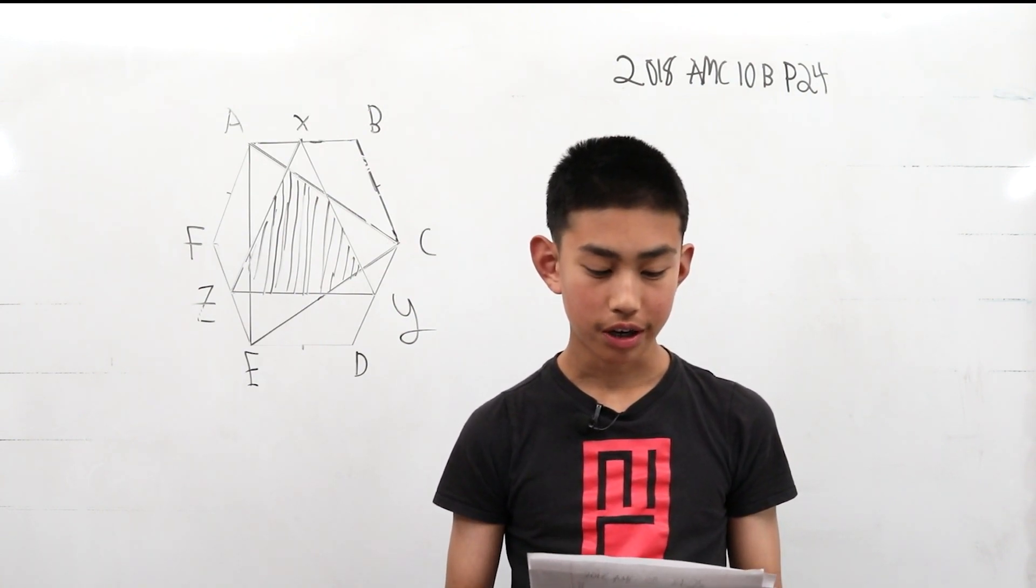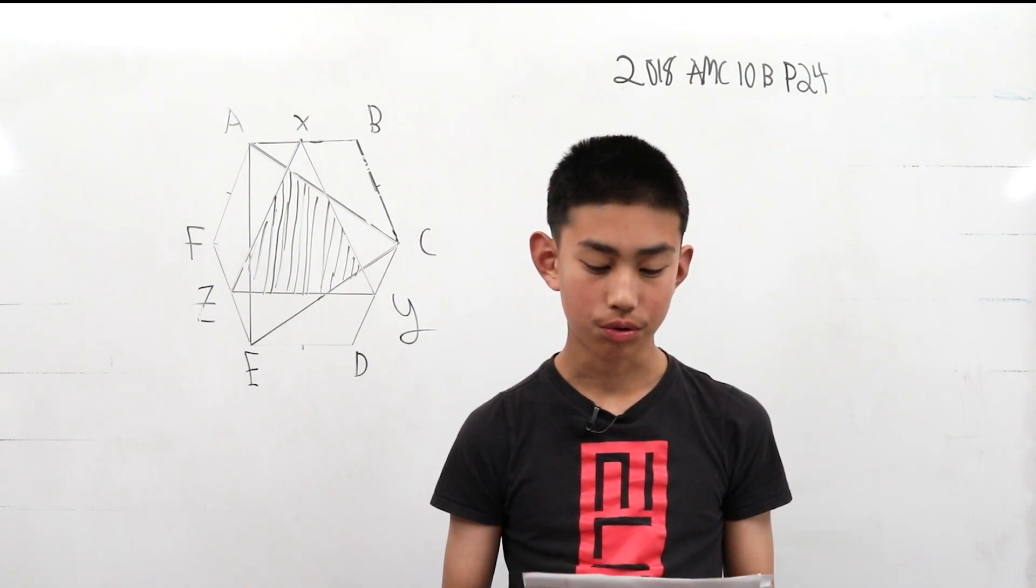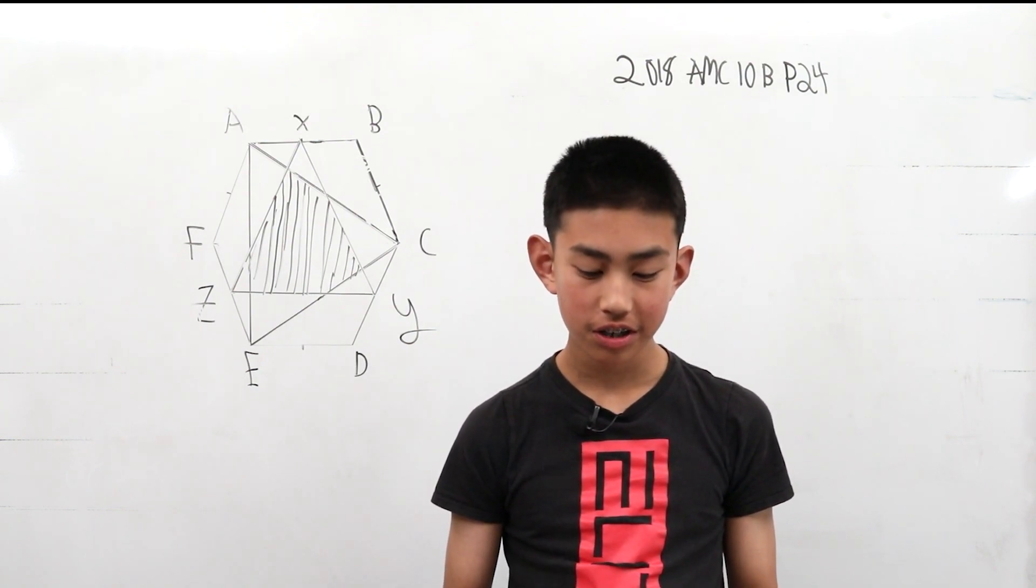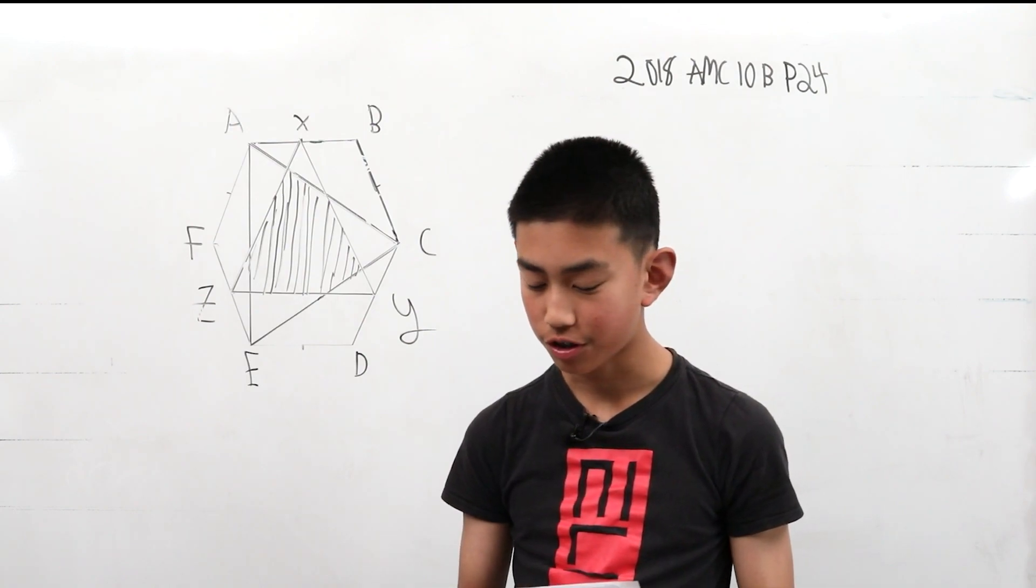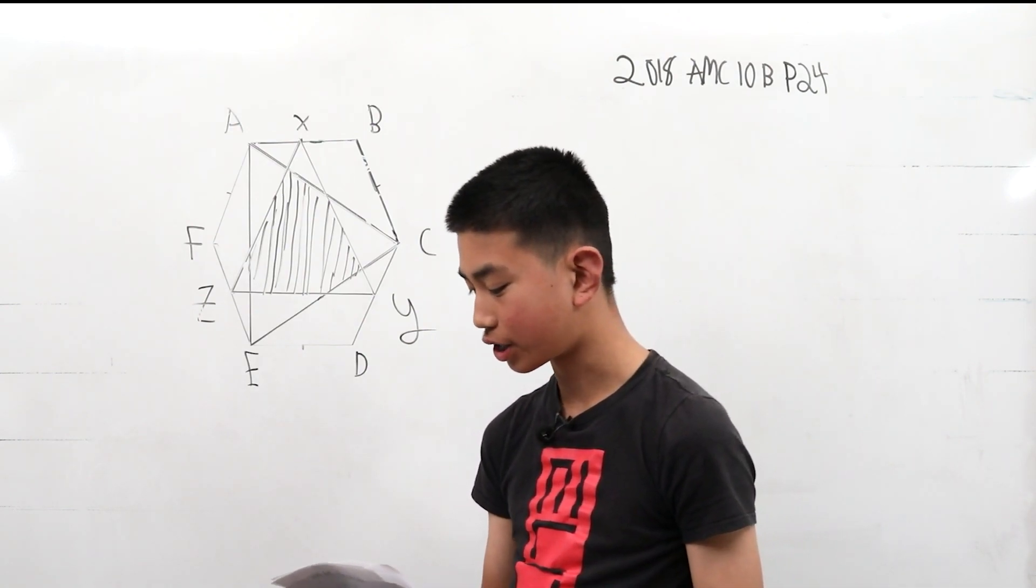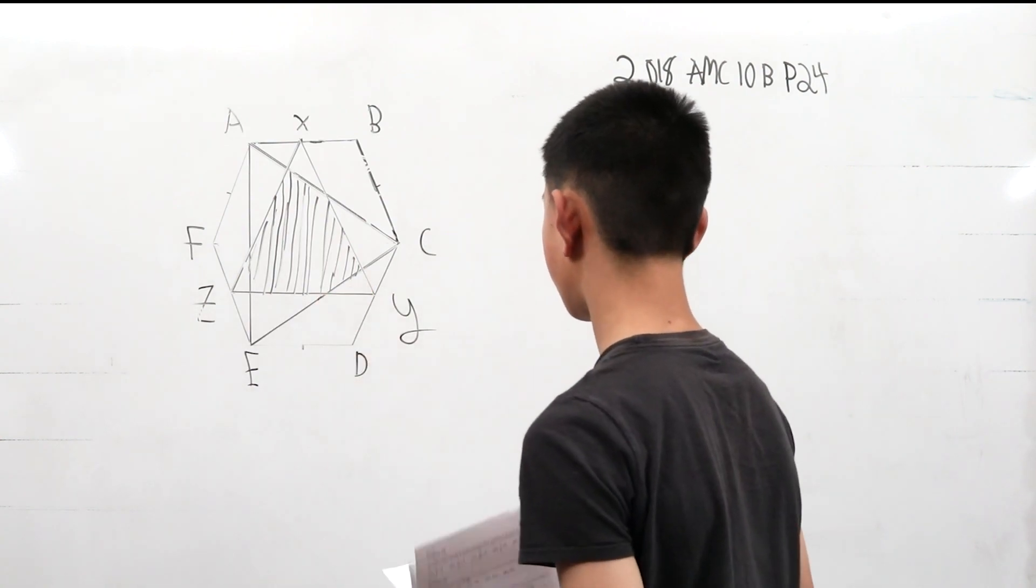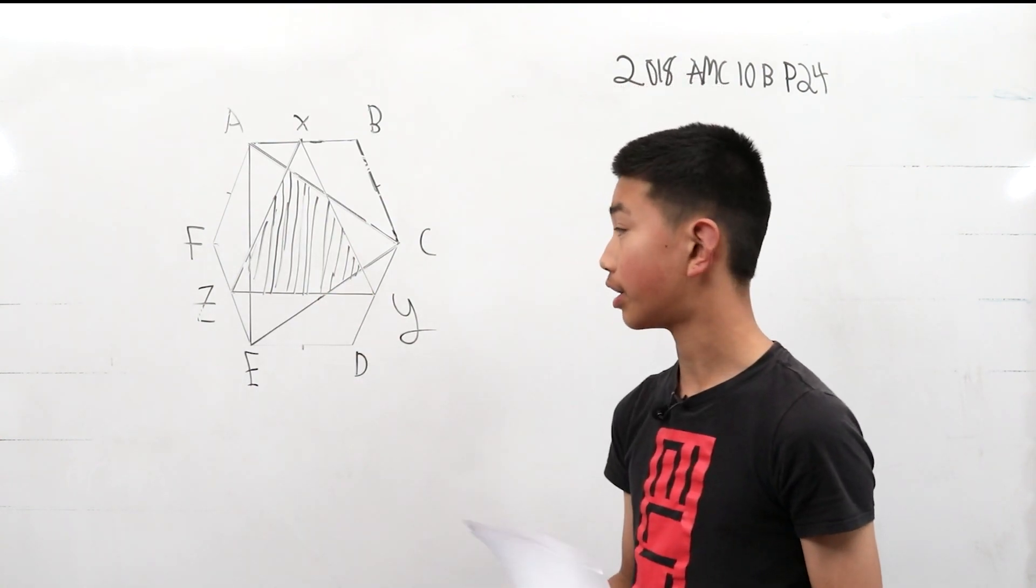What is the area of the convex hexagon whose interior is the intersection of the interiors of triangle ACE and triangle XYZ? So this shaded area is the area we're trying to find.